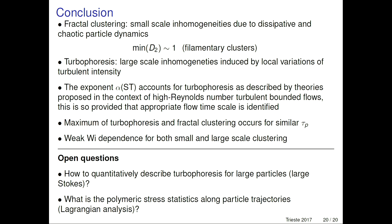In conclusion, in our elastic turbulent flows we have a presence of small-scale clustering due to the dissipative and chaotic dynamics of the particles. There is also the presence of turbophoresis, accounting for large-scale inhomogeneities, induced by local variations of turbulent intensity. The exponent alpha as a function of Stokes, which accounts for turbophoresis, can be well described by theories available in the context of high Reynolds number turbulent flows — noting these models are validated only for small particles. The maximum of both large and small-scale clustering occurs for similar values of tau_p, and there is very weak Weissenberg dependency for both clustering types. In the future, we aim to quantitatively understand turbophoresis for large-size particles and, if possible, also understand polymer statistics along particle trajectories.